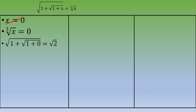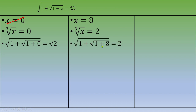Case 2: x equals 8. The cubic root of 8 equals 2. Plugging in: square root of (1 plus square root of (1 plus 8)). Now 1 plus 8 equals 9, square root of 9 is 3, then 3 plus 1 equals 4, and square root of 4 is 2. So both sides equal 2, confirming x equals 8 is a valid solution.